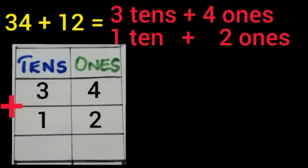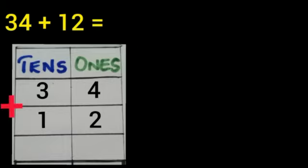We have already studied that first of all, we should add the numbers in the ones column. Which are the numbers in the ones column? Yes, 4 and 2. So first of all, we should add 4 and 2. 4 plus 2 is same as 6.